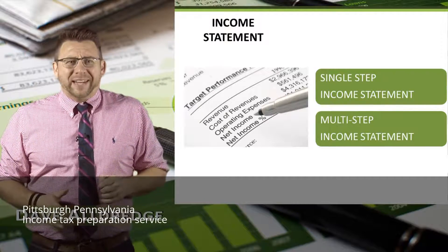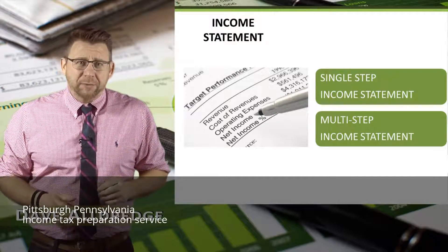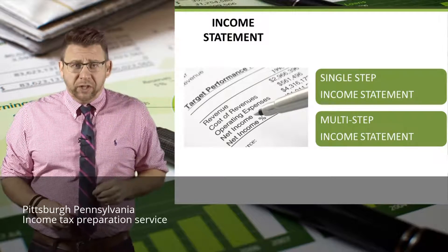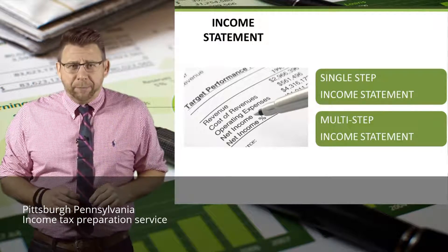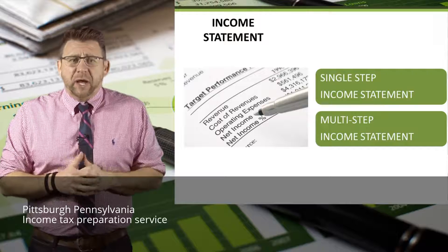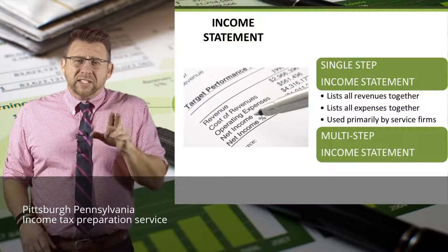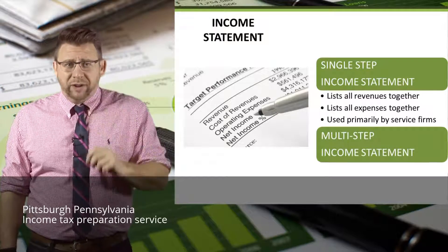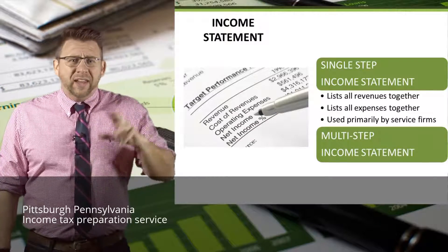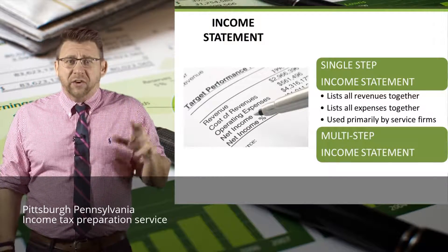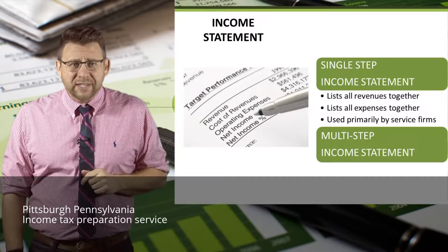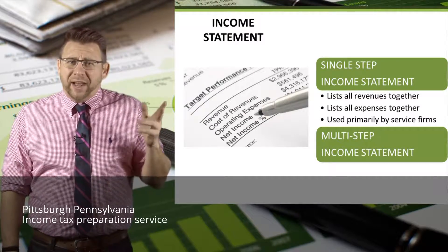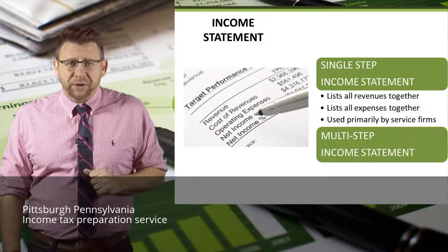There are two primary formats for the income statement: the single-step income statement, which you are already familiar with, and the multi-step income statement, which we will learn about in this podcast. The single-step income statement lists all revenues together and totals them for total revenue, then all expenses are listed together and totaled for total expenses. The difference is then net income. This format is primarily used by service firms.